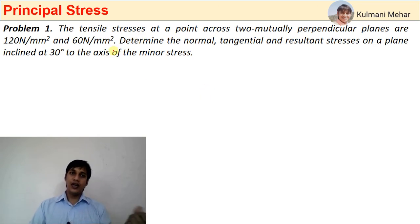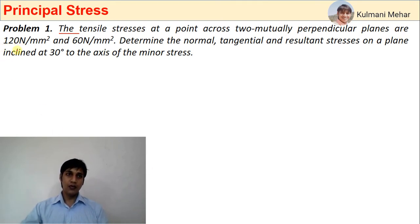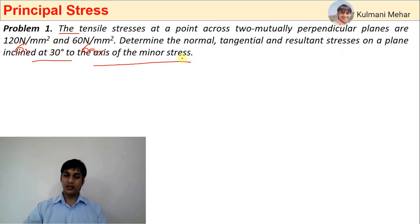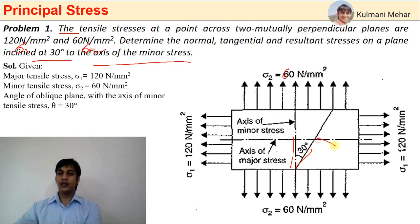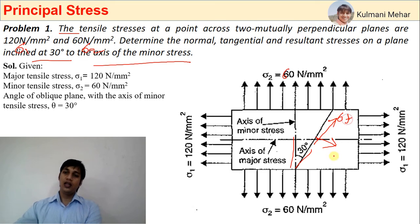Let's take a problem. As discussed in the previous class regarding stress on an inclined plane: the tensile stresses at a point across two mutually perpendicular planes are σ1 = 120 N/mm² and σ2 = 60 N/mm². Determine the normal, tangential, and resultant stress on a plane inclined at 30° to the axis of the minor stress. First, we draw the figure: σ2 = 60 N/mm², σ1 = 120 N/mm², and θ = 30°. We need to find σN and σT.